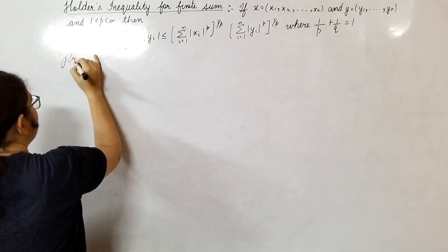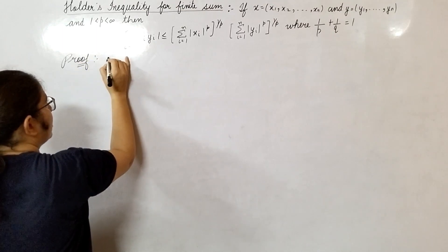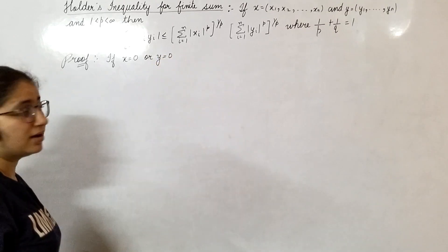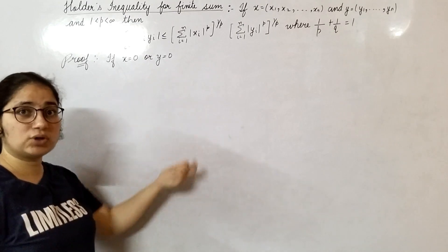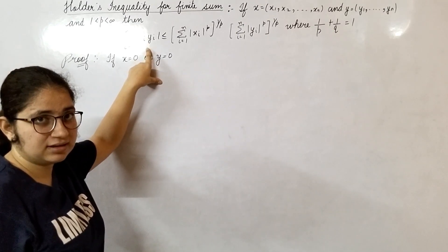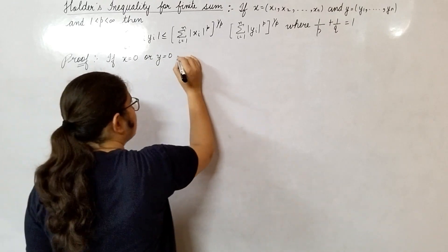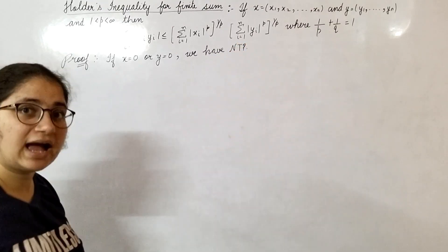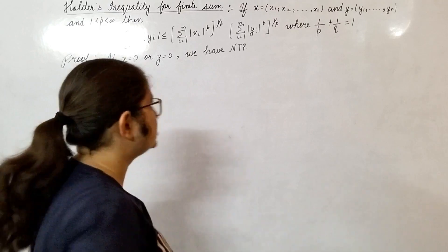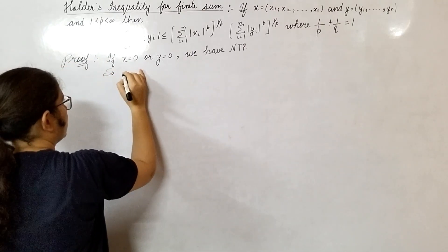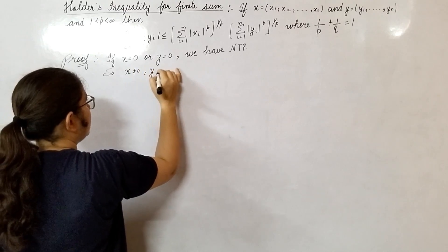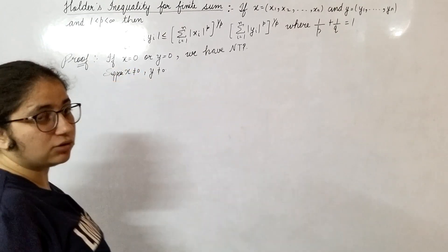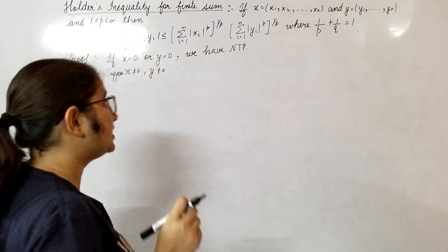So firstly we will show for finite sum. See, the proof is: if x equals 0 or y equals 0, same as we did in the lemma. If x equals 0 or y equals 0, in both cases this inequality holds, so we have nothing to prove. So what we have to take is x and y both non-zero. Now how will we show this? We will show it by the help of Lemma 1.